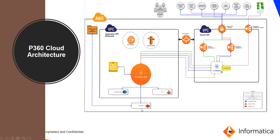The S3 bucket also exposes a hot folder directory where users can drop files for automated processing. To pick up these files from the S3 bucket, there is a direct connection — shown as the blue line — to the P360 server. The P360 server already has code that checks the S3 bucket for new files, then picks them up and processes them.